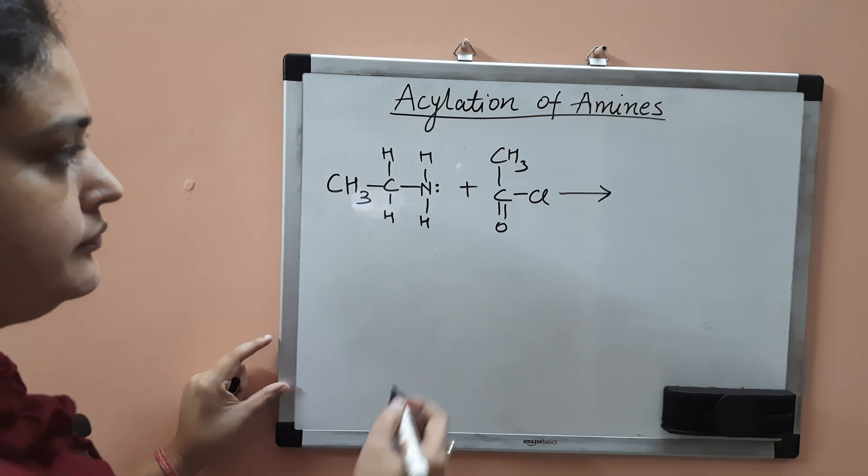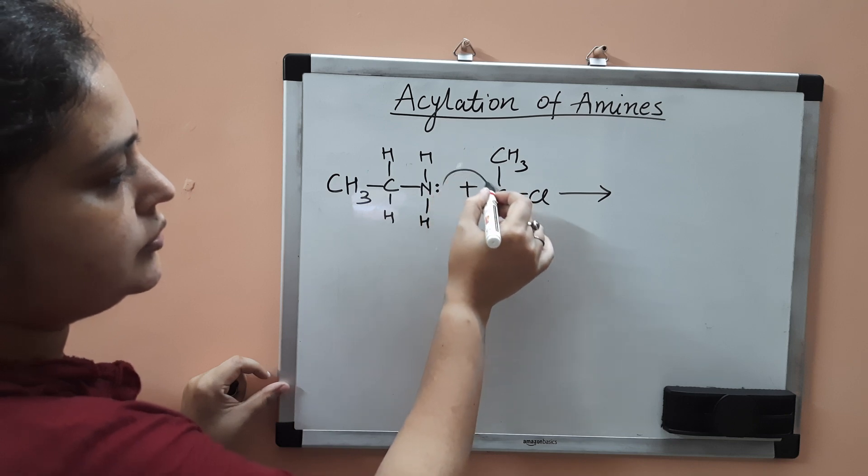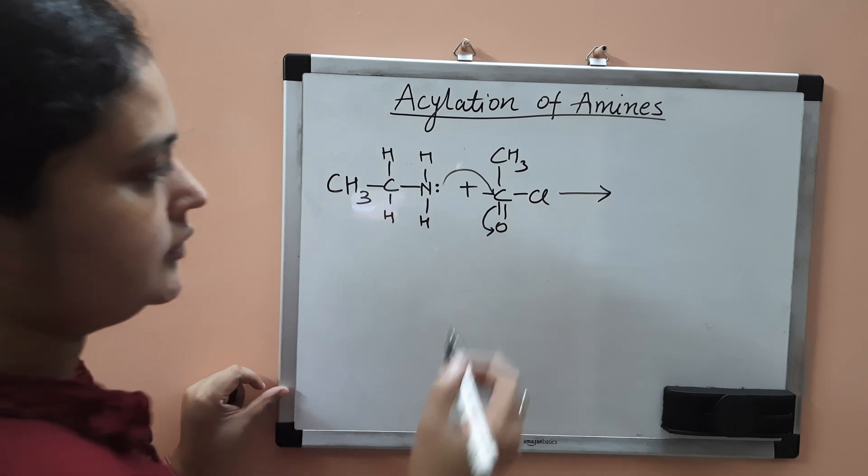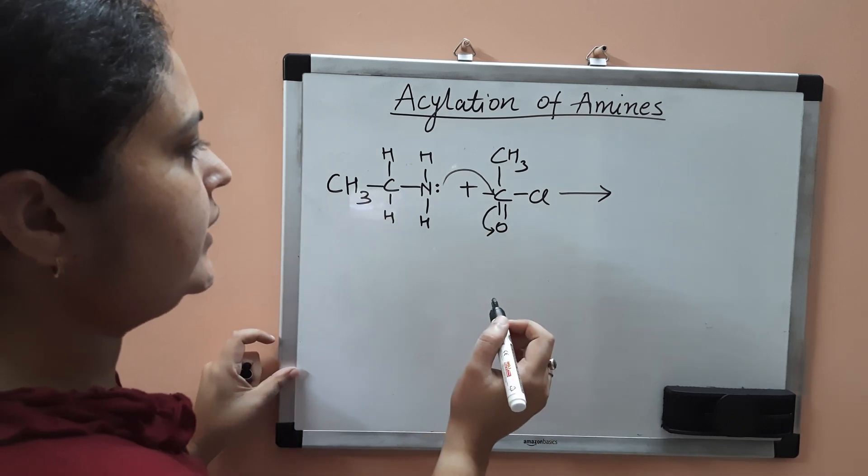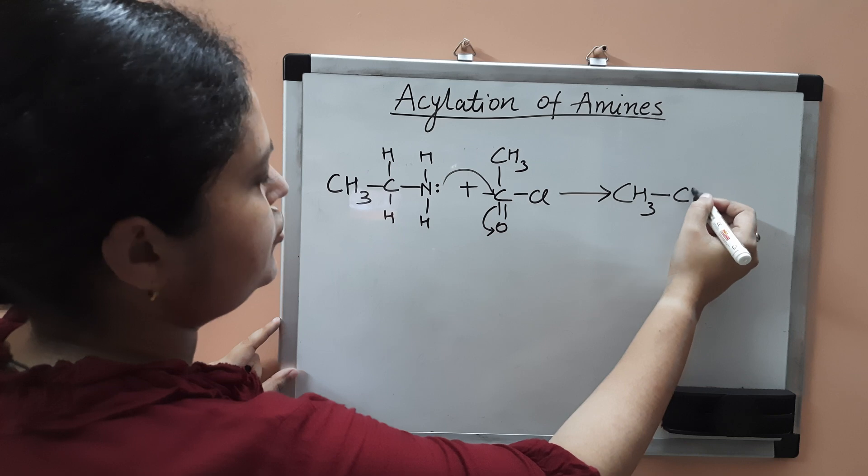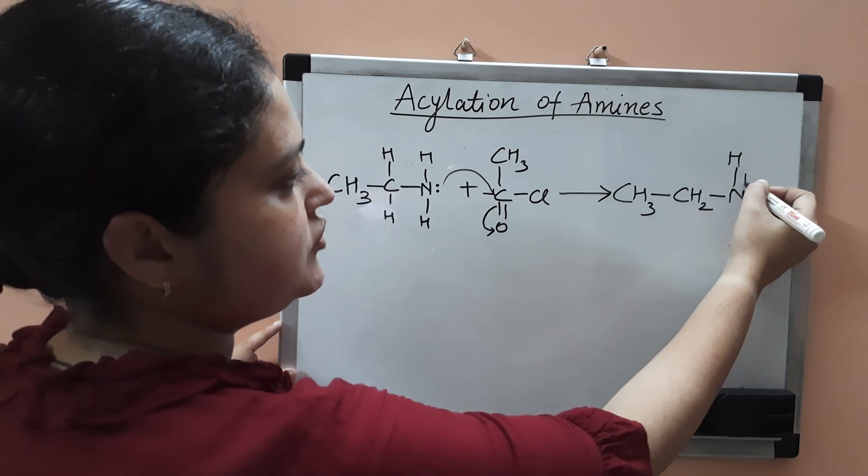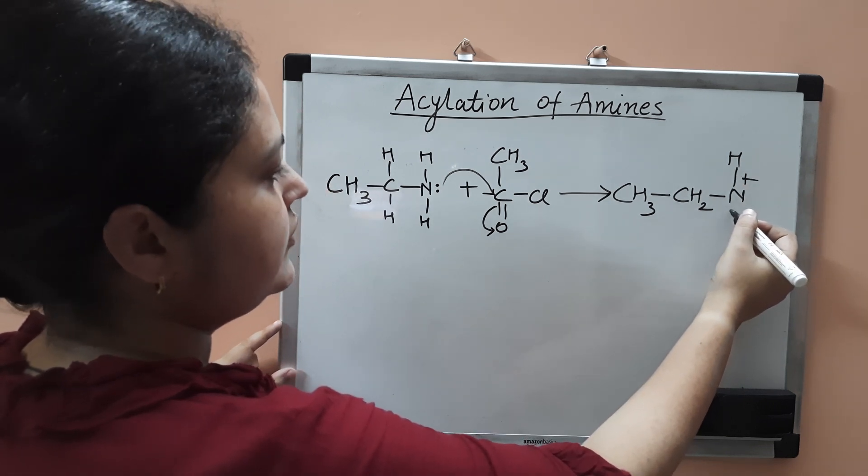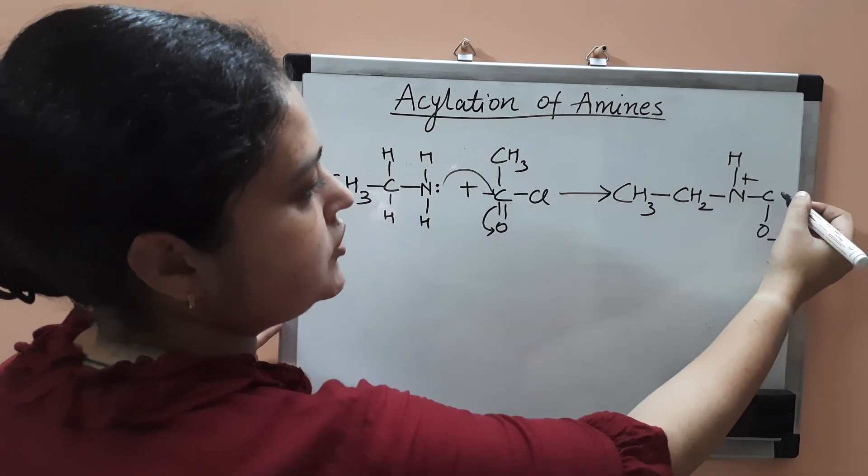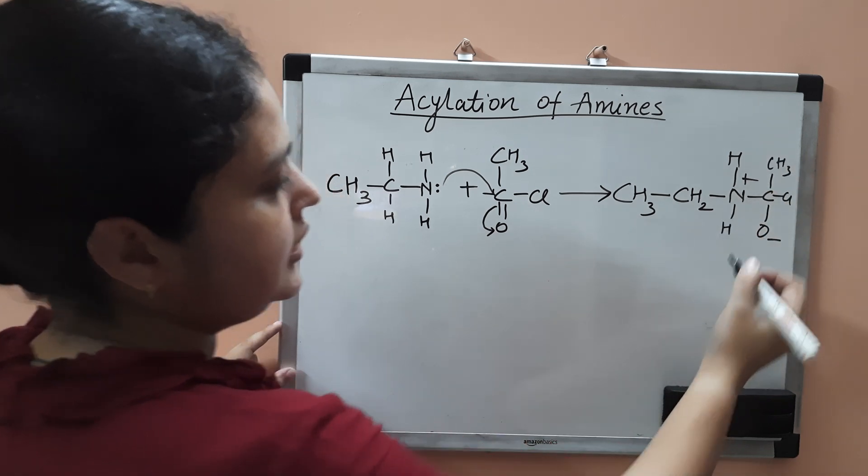First, the lone pair will go towards the carbonyl carbon, and this double bond will shift. You will get CH3CH2N here, H here, positive charge on nitrogen, negative charge on oxygen, then chlorine here, CH3, and here NH.